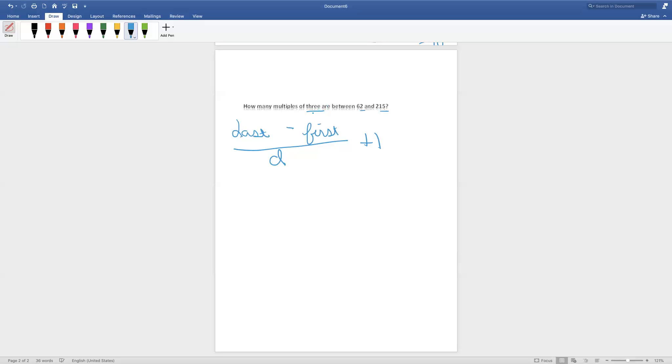Now, let's solve. We want to find the multiples of 3. Even though there may be a different common difference, we want to find only the multiples of 3. That would be 3, 6, 9, and so on. There would be a common difference of 3. So, we're going to write 3 for the common difference. Last term, 215. First term, 62. So, 215 minus 62 divided by 3 plus 1.